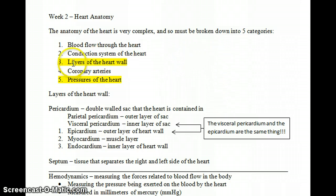For week two we're still talking about the anatomy of the heart. Remember we can look at the anatomy of the heart in five different aspects: blood flow through the heart which we talked about last week, the conduction system of the heart, the layers of the heart wall, coronary arteries, and the pressures of the heart. So this week I want to focus on these two things: layers of the heart wall and pressures of the heart.